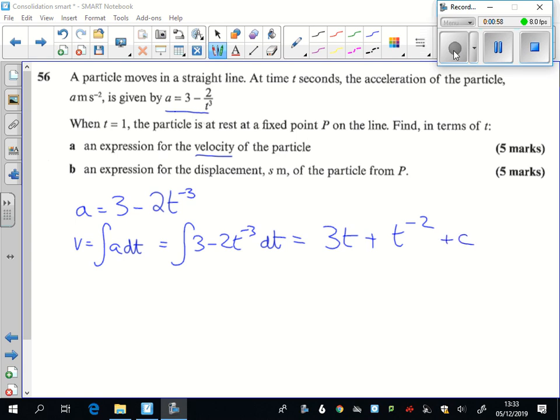Now how are we going to find out what that c is? Well we were told that when t equals 1, it is at rest. So at t equals 1, at rest means the velocity is 0.